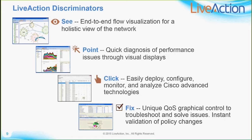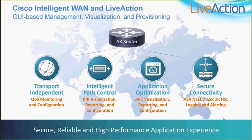LiveAction has the capability to fix problems once spotted. Many customers go in and solve QoS problems on the fly to provide better services to fellow employees. LiveAction is great for Cisco Intelligent WAN — all its capabilities make it ideal for integration into a Cisco network made up of AX routers. The four pillars of iWAN are shown here.